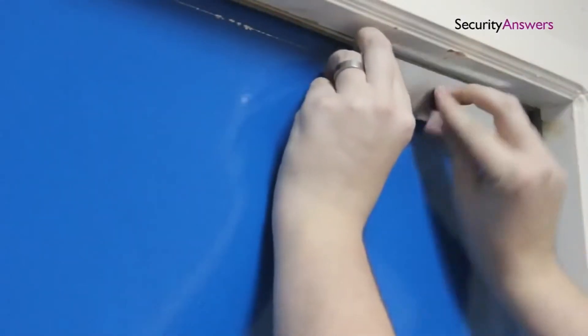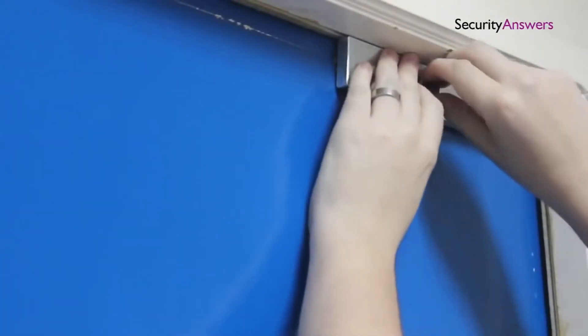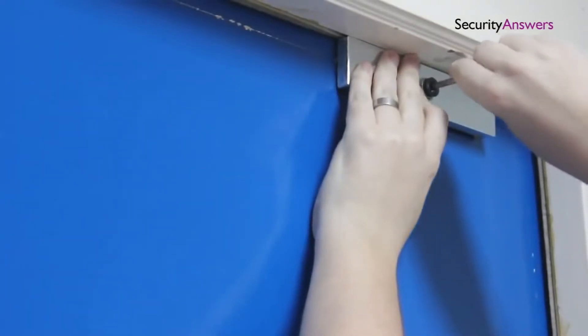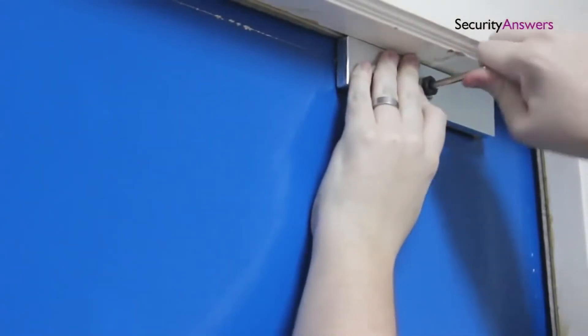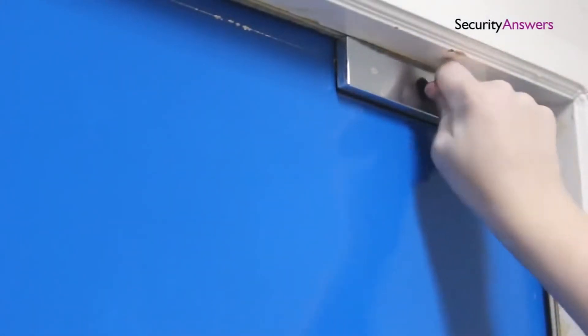Once you have marked off the area, you can begin to mount the plate to the door using the appropriate screws or fittings. Before you do your final tightening of your screws, close the door to double check the fitting of your lock. If everything is okay, go ahead and tighten your screws.